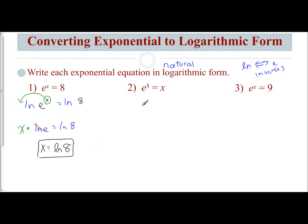It's the same idea here. I'm going to take the natural log of both sides. So I have natural log of e to the 5th and natural log of x. That allows me to take this exponent and bring it down to make it the coefficient. So I have 5 times natural log of e equals natural log of x.